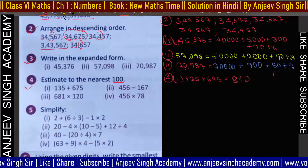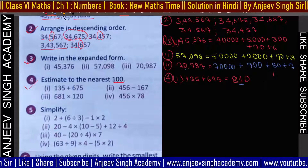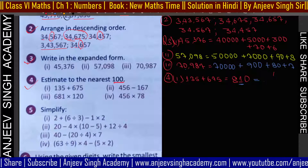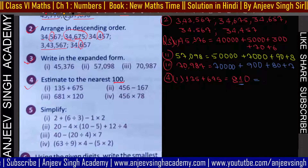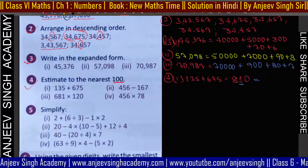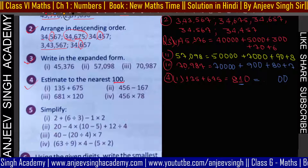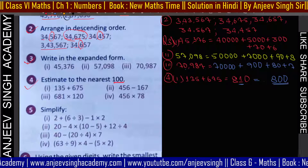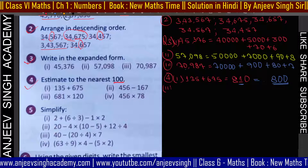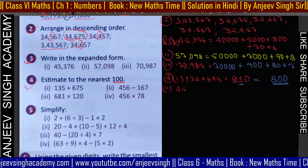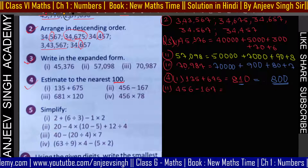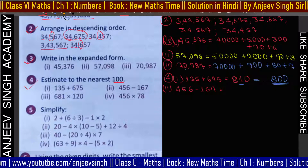Nearest 100 पर round up करेंगे। Check करने पर यह 800 बन जाएगा। तो इसका answer 800 हो जाएगा। Second question देखते हैं: 456 minus 167 — subtraction का काम करना है।